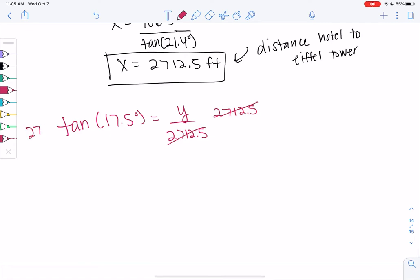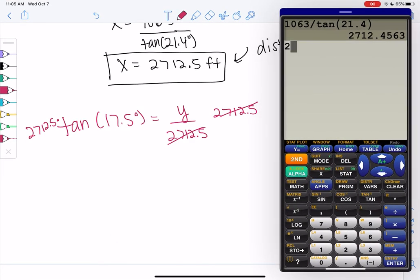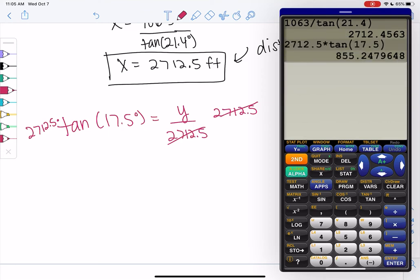We'll multiply. And we can use the calculator. We can't really do this without a calculator because it's not on the unit circle. It's not a standard angle on the unit circle. And we get Y is about 855.2 feet.